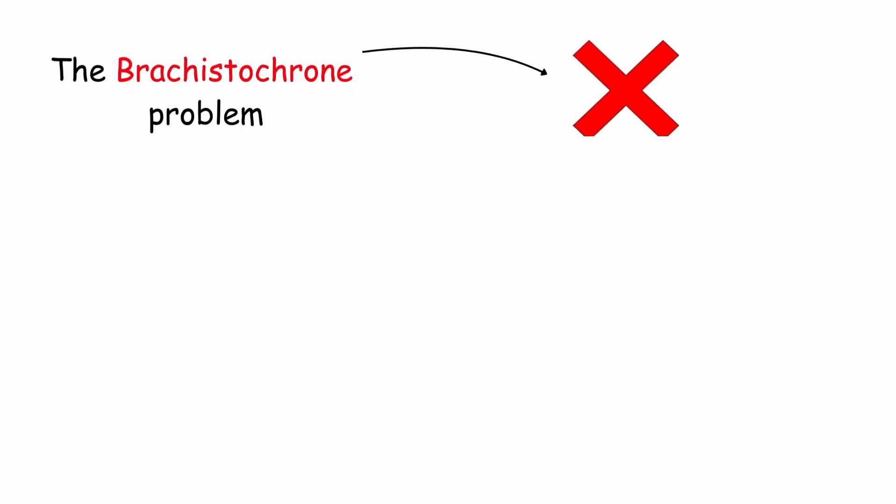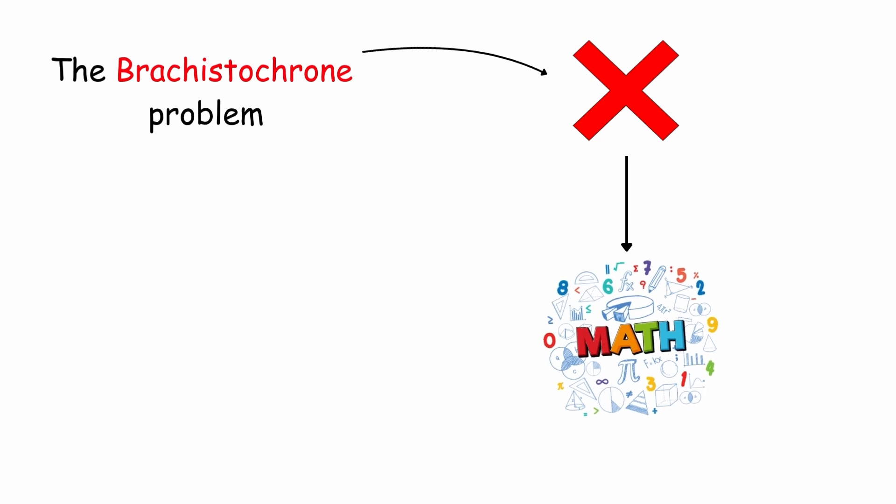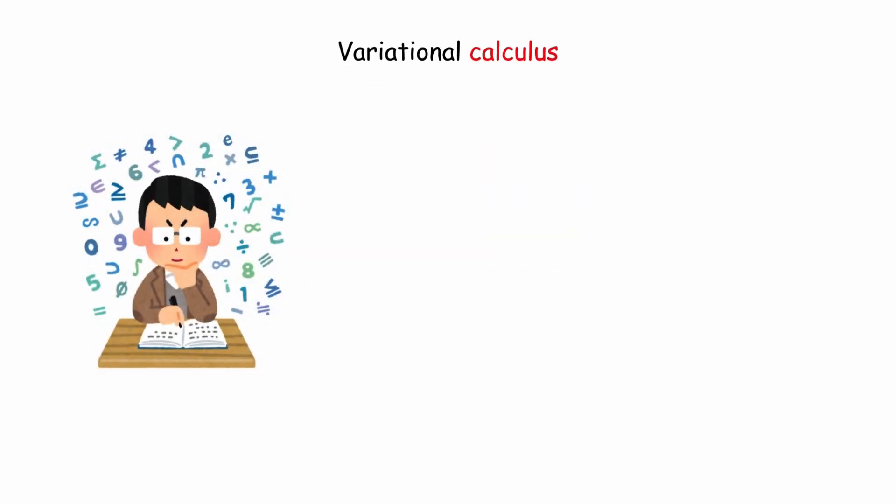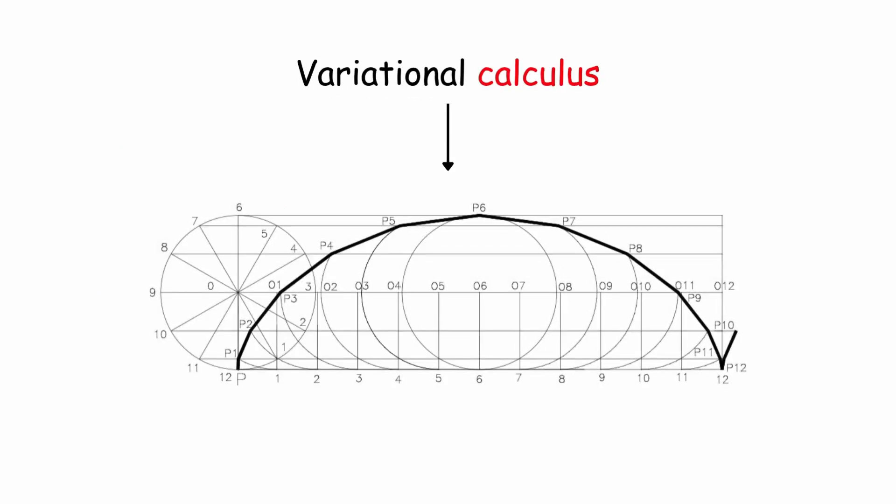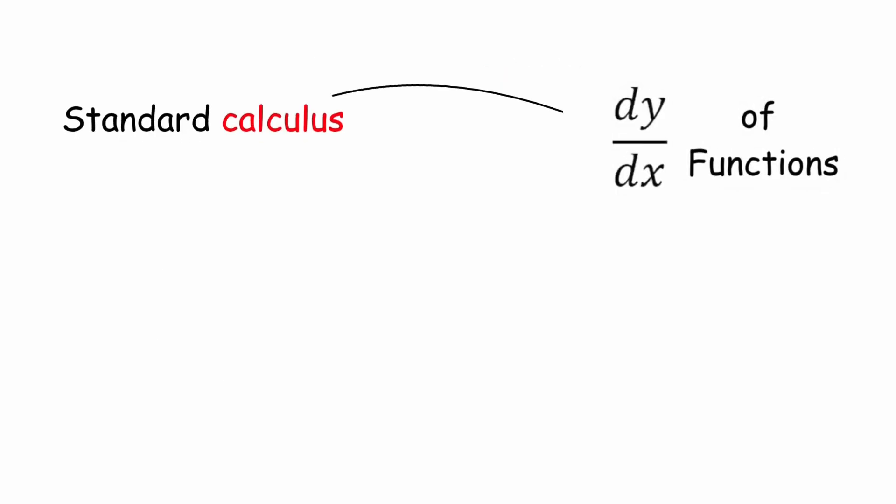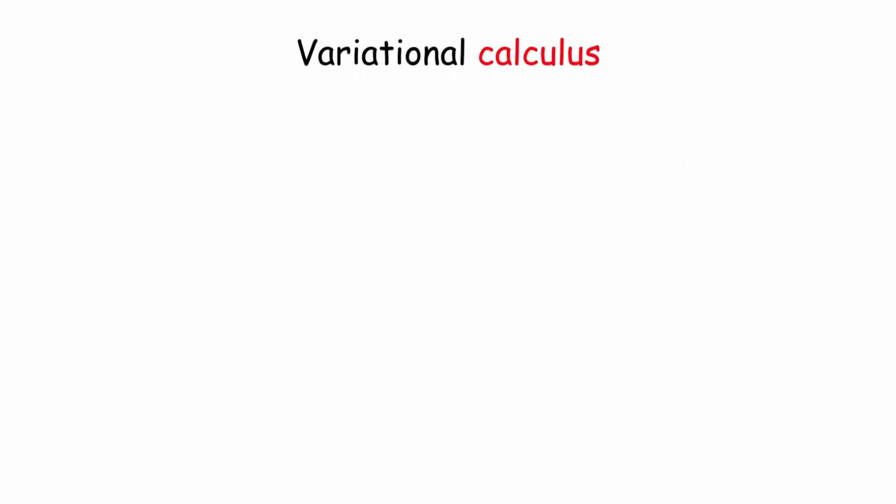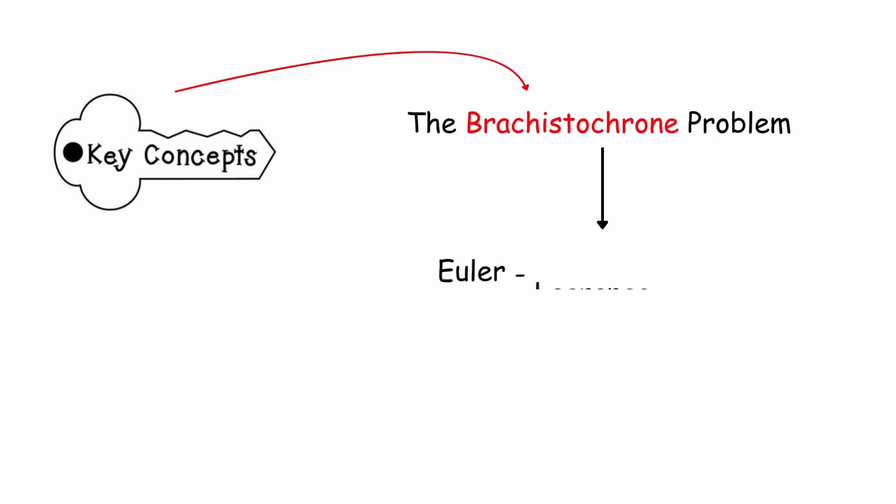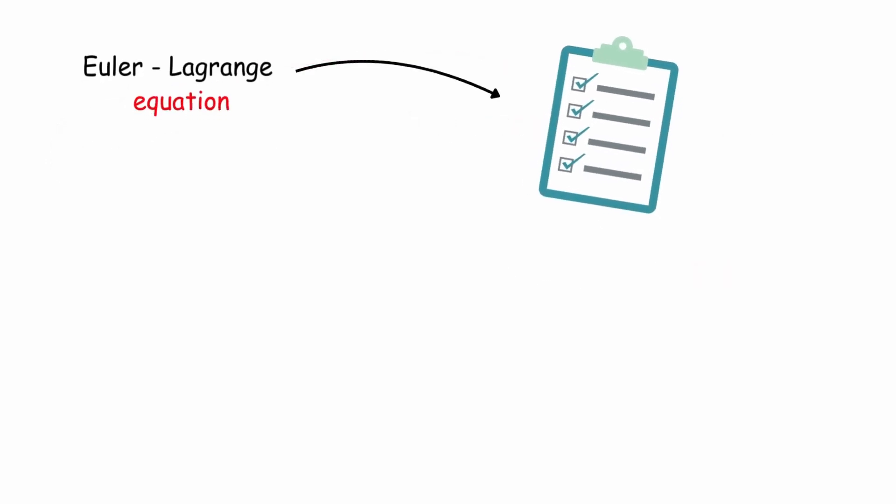The Brachistochrone problem could not be solved with the traditional mathematical tools of differential calculus. Its solution required a new branch of mathematics: variational calculus, whose goal is to find functions that optimize certain quantities. Variational calculus studies how a function changes when small variations are made in its form. Unlike standard calculus, which works with derivatives of functions, in variational calculus, an optimal function is sought from an infinite set of possible solutions. A key concept in this problem is the Euler-Lagrange equation, which establishes a necessary condition for a function to minimize or maximize an integral value.